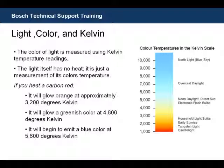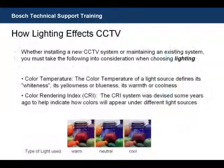While CCTV technology today will do a lot to enhance color, a color temperature that is too warm can make objects appear orange-ish. And if a color temperature from lighting is too cool, it can make objects appear blue or green. This brings us to the color rendering index. The CRI system has been in place for several years — it helps indicate how colors will appear naturally under different types of light sources.